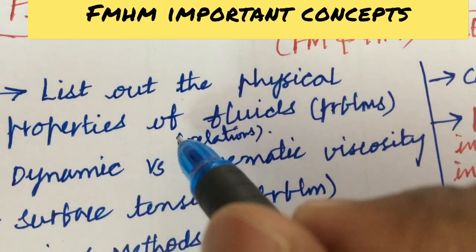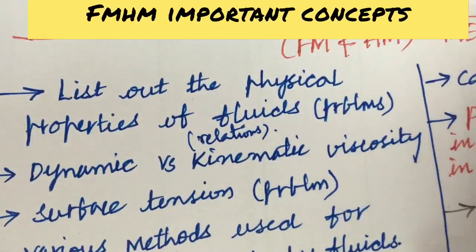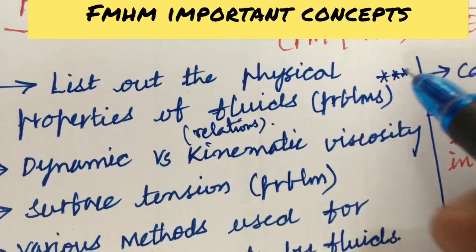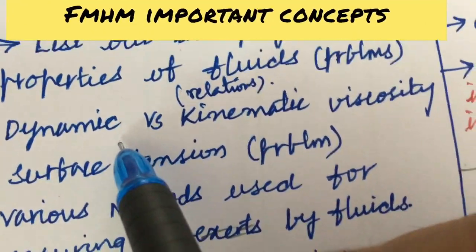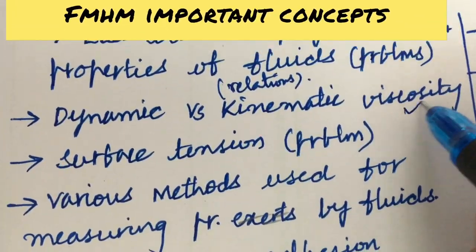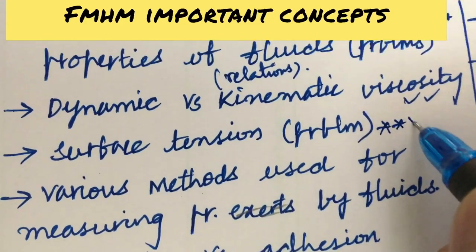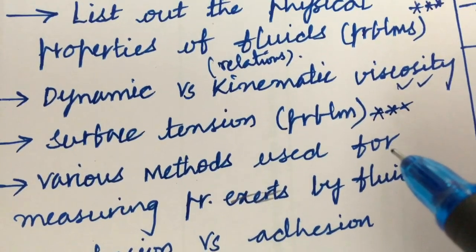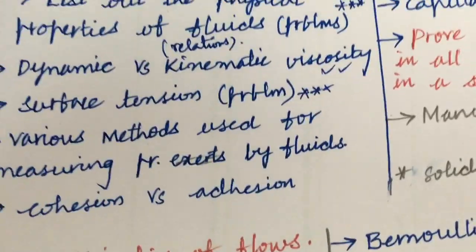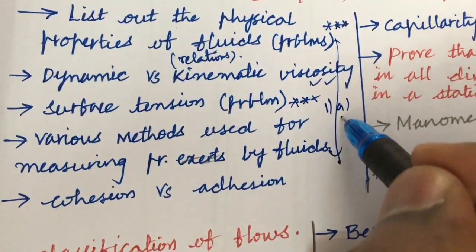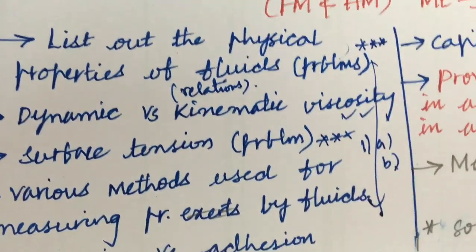The first and foremost question — one of the gunshot questions — is the physical properties of the fluid, the problems related to them, as well as the relations among them. Later, the differences between dynamic and kinematic viscosity and the problems related to them are also asked many times. Problems related to surface tension, the difference between cohesion and adhesion forces, and the various methods used for measuring pressure by fluid are also important. From this part, you can expect questions 1A and 1B. Without skipping, work out each and every problem on physical properties.